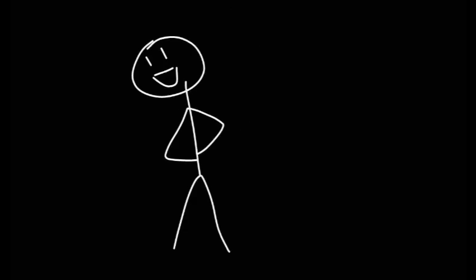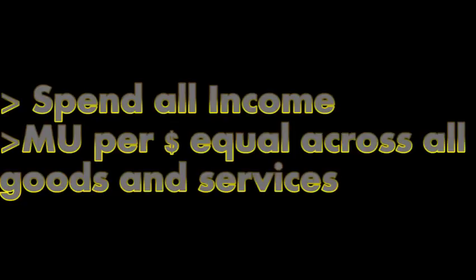When the consumer maximizes total utility they are in a position of consumer equilibrium. For a consumer to achieve consumer equilibrium, these conditions must be met: the consumer must spend all of their income on the goods and services, and the marginal utility per dollar must be equal across all of the goods and services.